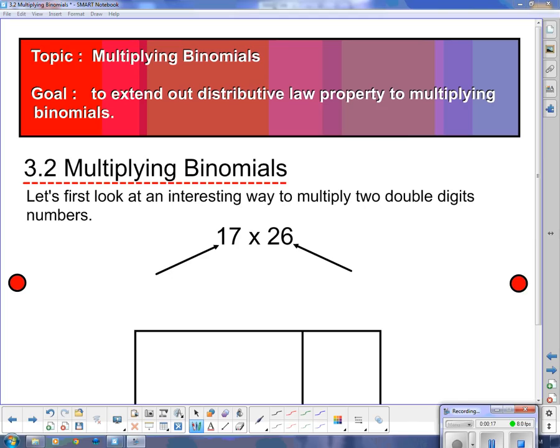So far with the distributive property we've only multiplied monomials, and just a quick recap. If we have 3x and we multiply it by 2x plus 4, the distributive property says that I multiply the monomial through. 3x times 2x is 6x squared and then 3x times 4 is plus 12x. So that was the distributive property that we recapped yesterday.